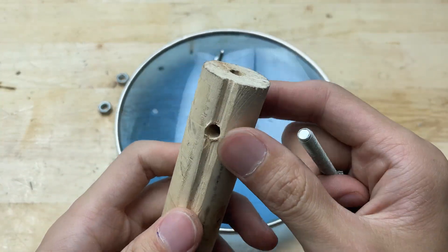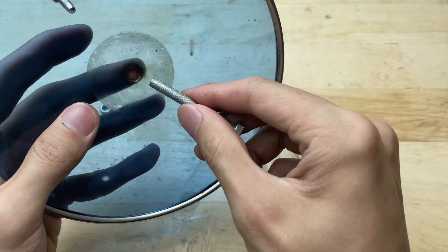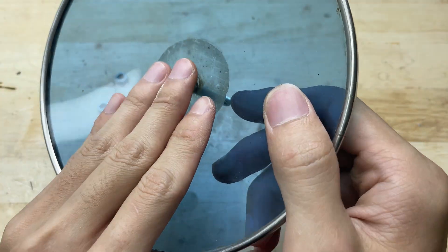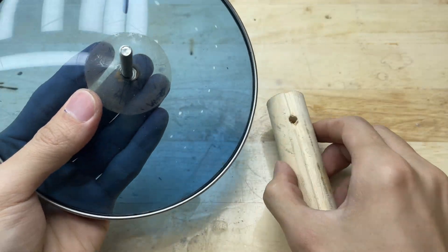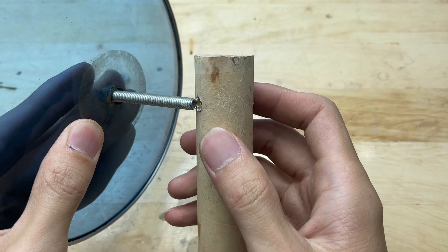Now, take the bolt and thread it to the hole in the pot lid first, then pass it through the hole you drilled in the wooden handle. Make sure everything lines up nicely.